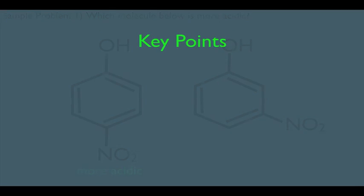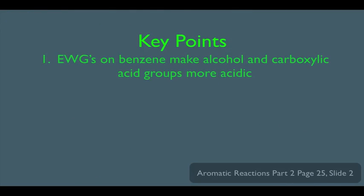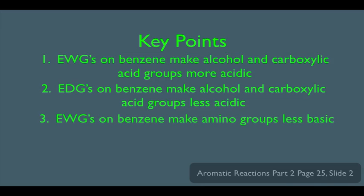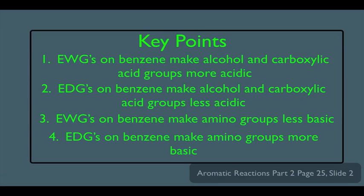So what have we learned? Key points. Number one: electron withdrawing groups on benzene make alcohol and carboxylic acid groups more acidic. Number two: electron donating groups on benzene make alcohol and carboxylic acid groups less acidic. Number three: electron withdrawing groups on benzene make amino groups less basic. Number four: electron donating groups on benzene make amino groups more basic.